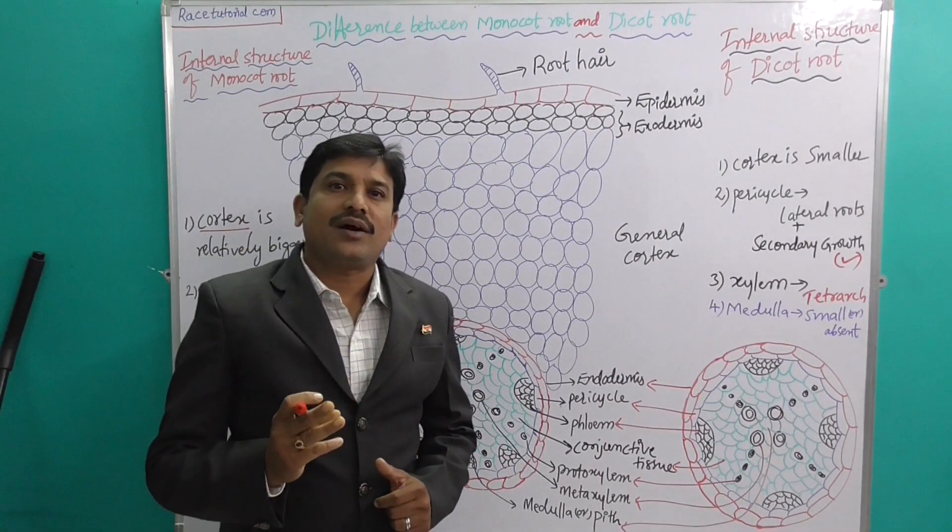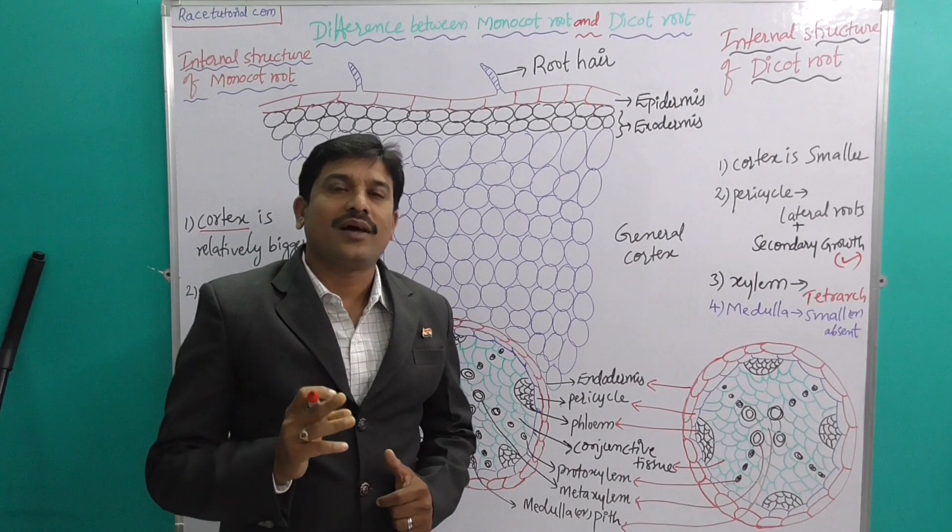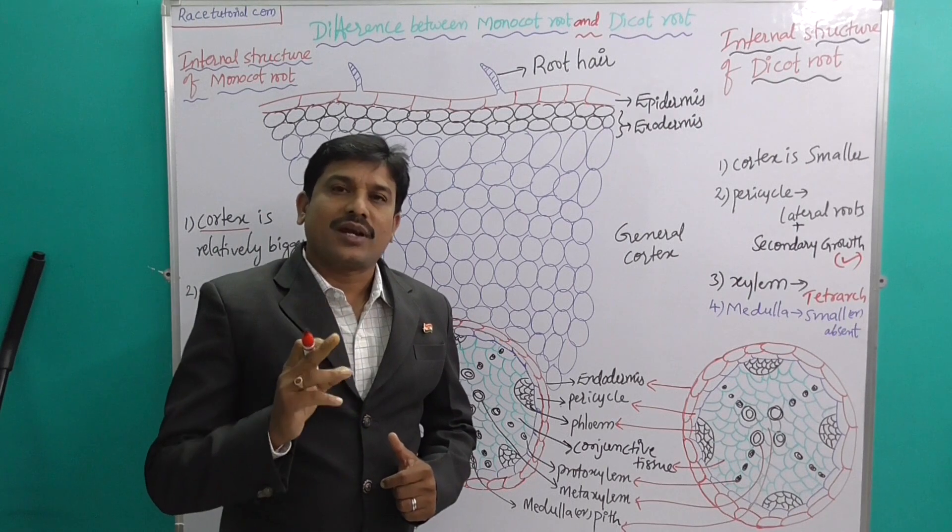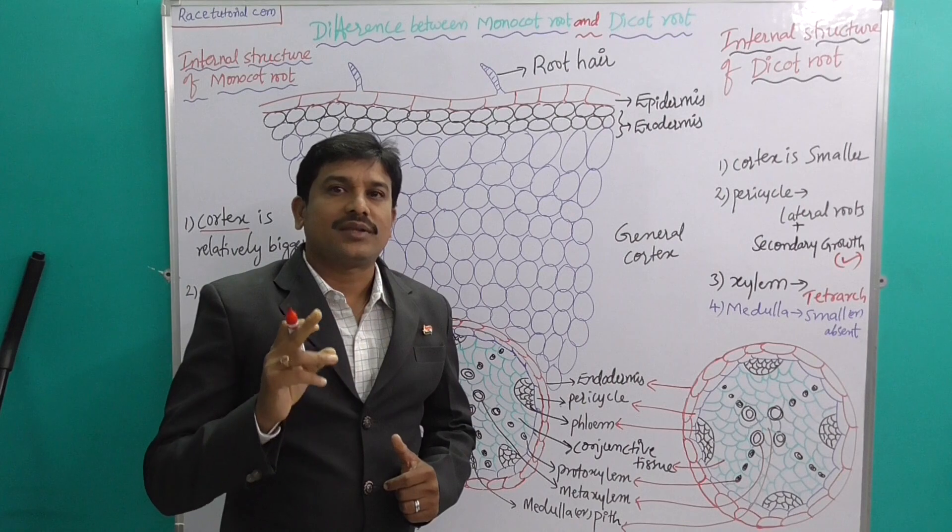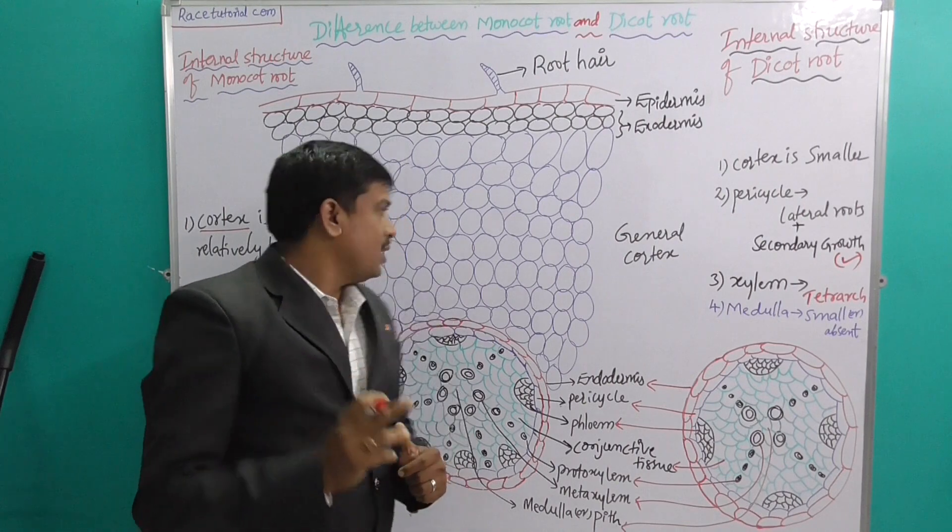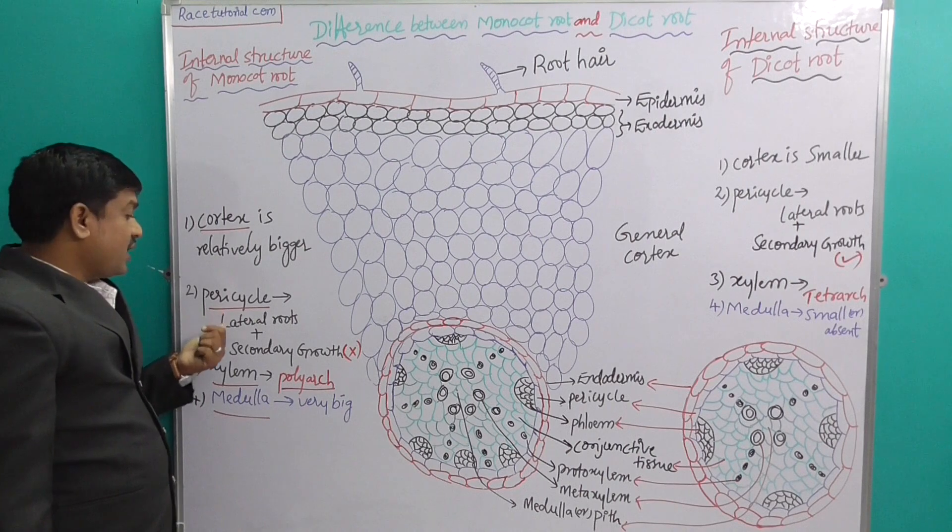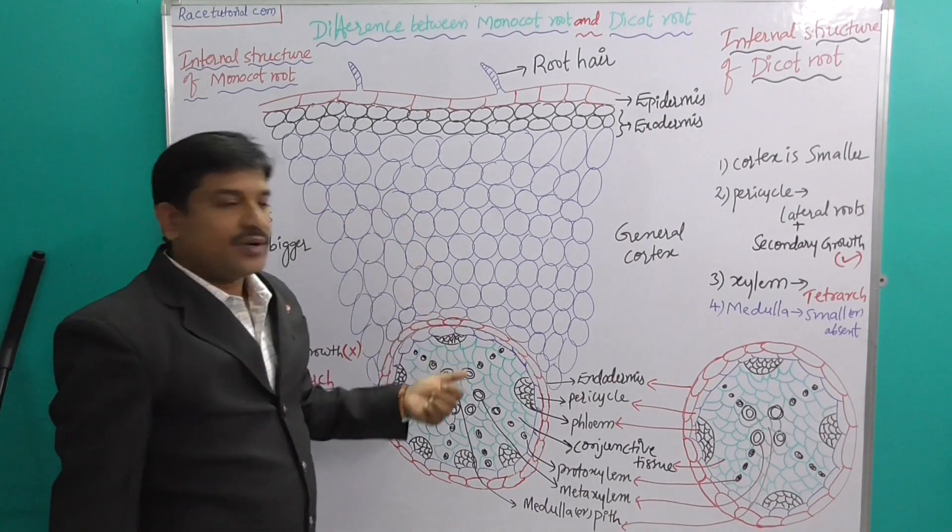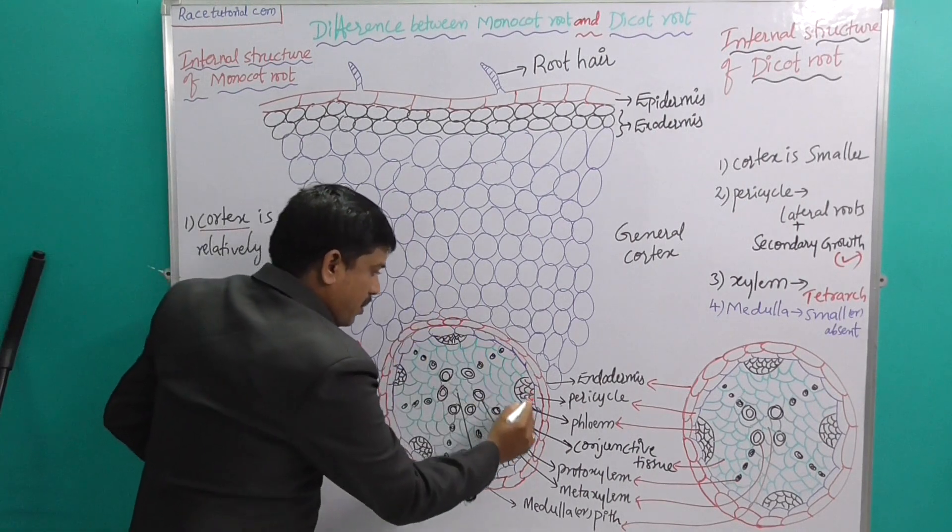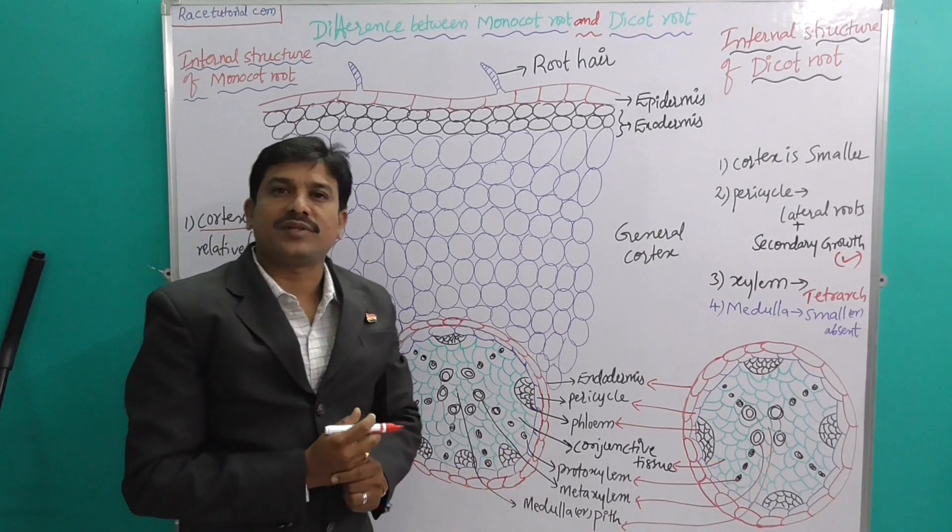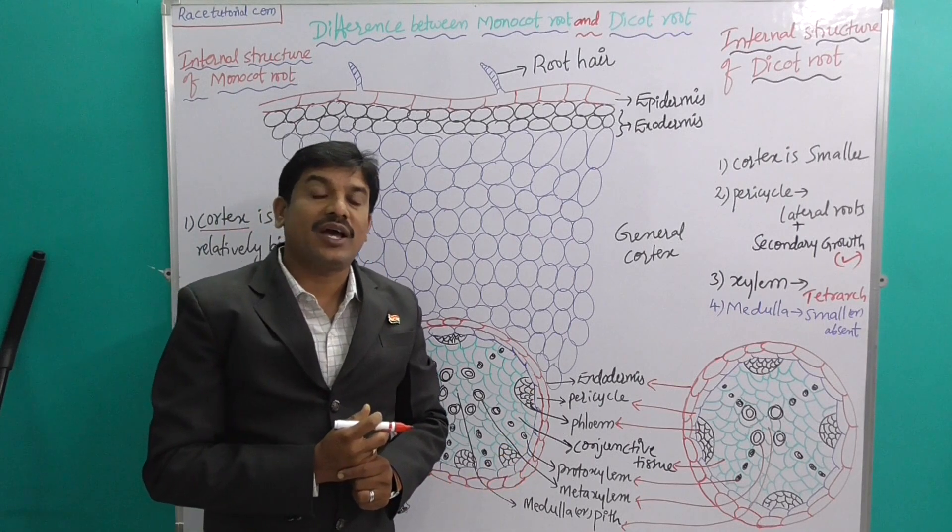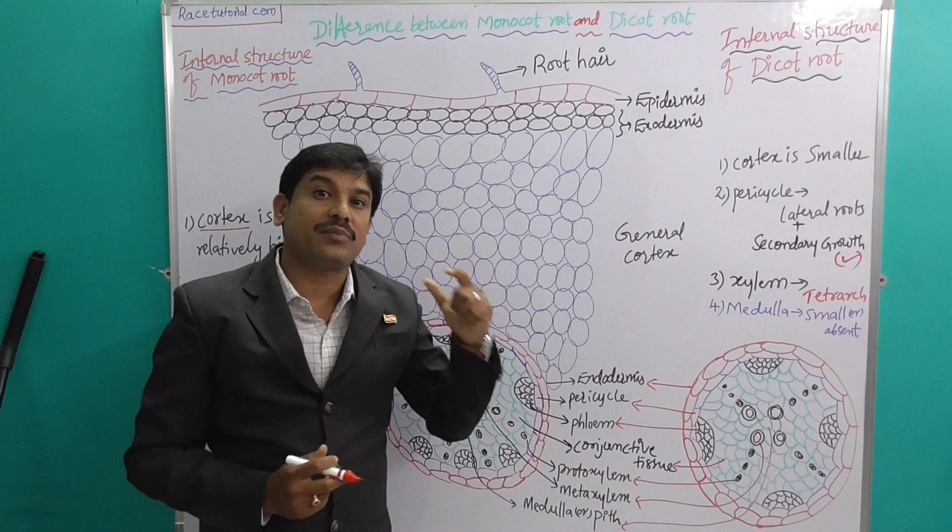The stele has three parts: pericycle, vascular bundle, and medulla. In pericycle, there are some differences. In monocot, the pericycle is helpful for lateral root formation, but secondary growth is absent.